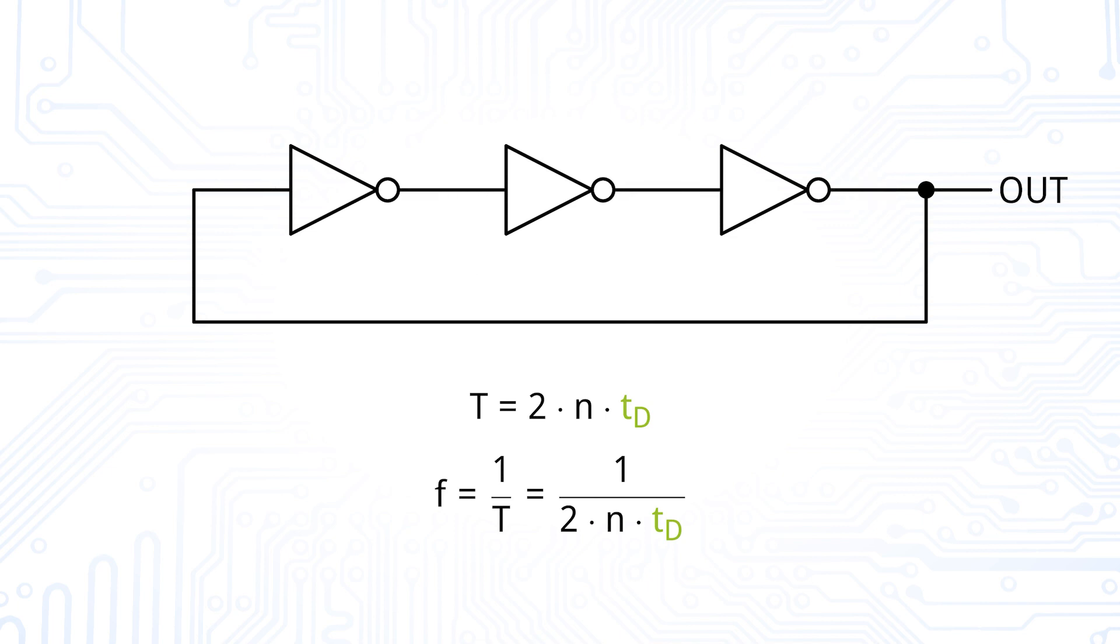As a third measure, we can also decrease the delay time by increasing the supply voltage. In this way, we could even see the ring oscillator as a voltage-controlled oscillator.